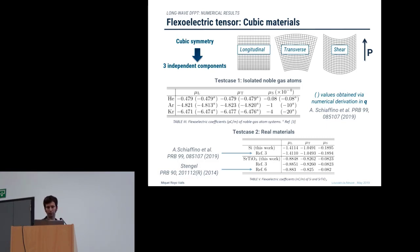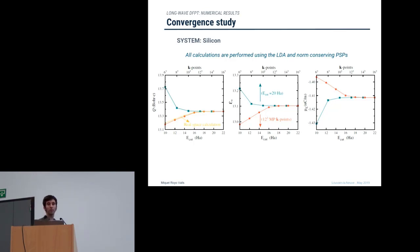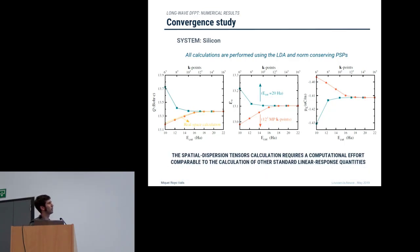Regarding convergence, for silicon I have shown the quadrupole element and the longitudinal element of the flexoelectric tensor compared with a standard linear response magnitude such as the macroscopic dielectric tensor. The main message is that these spatial dispersion properties converge similarly to the dielectric tensor, which is good news — it means we don't need significantly higher computational effort compared to standard linear response magnitudes in order to obtain these spatial dispersion tensors.